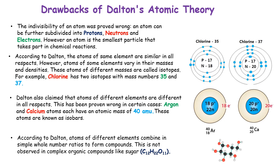There were a few drawbacks of Dalton's theory as well. The indivisibility of an atom was proved wrong — an atom can be further subdivided into protons, neutrons, and electrons. However, an atom is still the smallest particle that takes part in chemical reactions. Also, according to Dalton, atoms of the same element are similar in all respects; however, atoms of some elements vary in their masses and densities. These atoms of different masses are called isotopes.